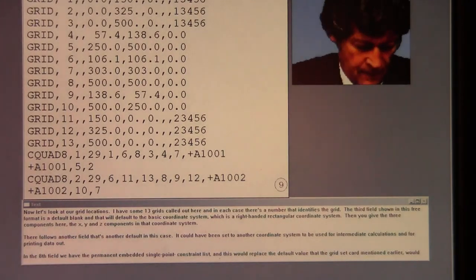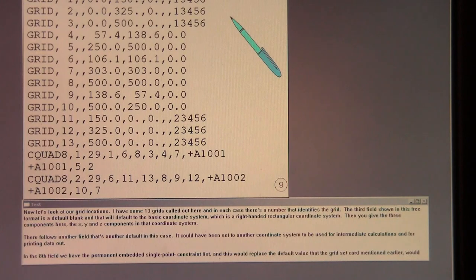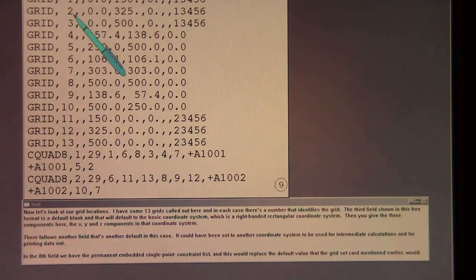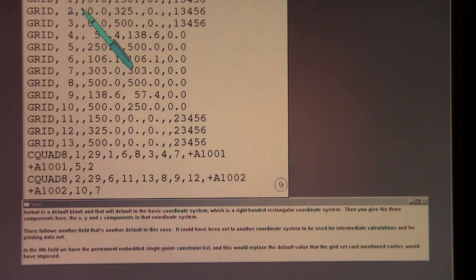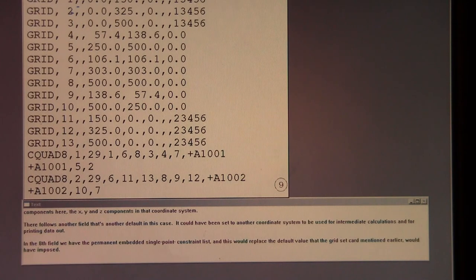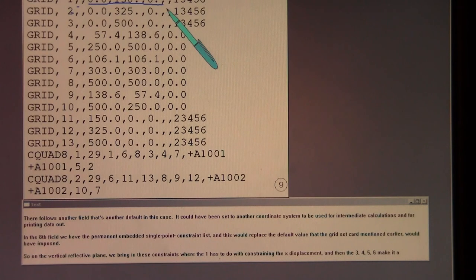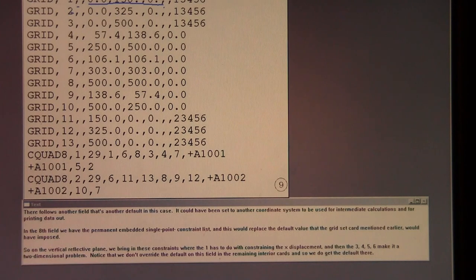Now let's look at our grid locations. I have some thirteen grids called out here. And in each case there's a number that identifies the grid by number. The third field shown in this free format is a default blank and that will default to the basic coordinate system, which is a right-handed rectangular coordinate system. Then you give the three components here, the X, Y, and Z components in that coordinate system. There follows another field that's another default in this case, but could have been set to another coordinate system to be used for intermediate calculations and for printing data out.